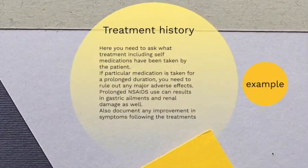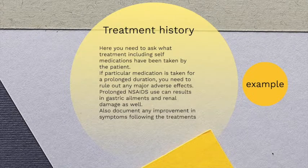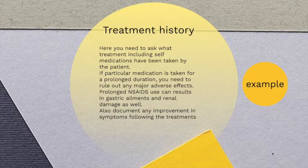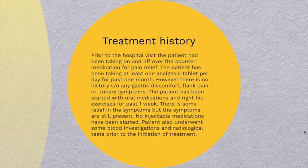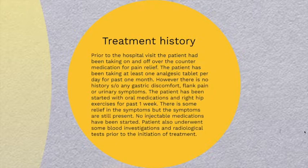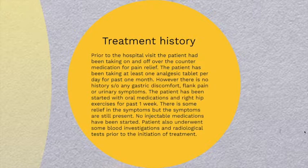Then coming to the treatment history. You need to ask what treatment, including self-medication, has been taken by the patient. If a particular medication is taken for a prolonged duration, you need to rule out any major adverse effects — for example, prolonged NSAIDs can cause gastric disorders and renal damage. You also have to document any improvement in symptoms following treatment, whether self-medicated or prescription based. Example: Prior to hospital visits, the patient had been taking on-and-off over-the-counter medications for pain relief, at least one analgesic tablet per day for past one month. However, there is no history of gastric discomfort, flank pain, or urinary symptoms. The patient has been started on oral medications and right hip exercises for past one week, with some relief in symptoms but symptoms still present. There are no injectable medications, and the patient also underwent blood investigations and radiological tests prior to initiation of treatment.